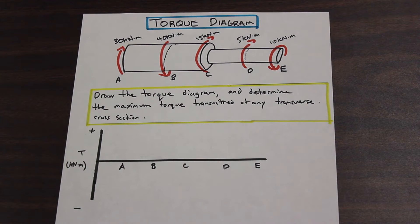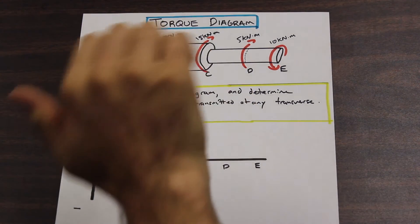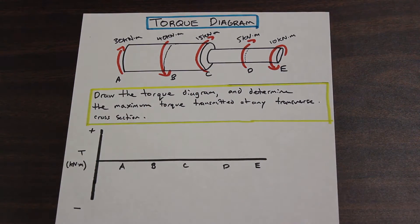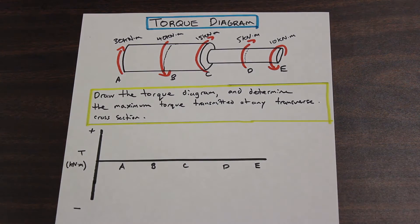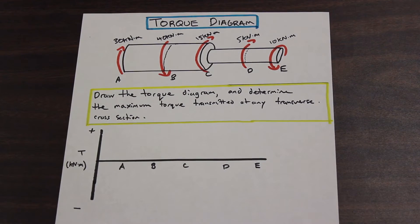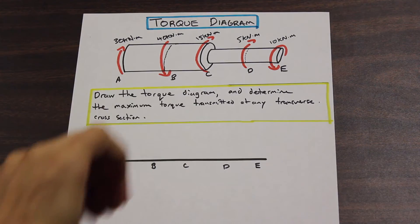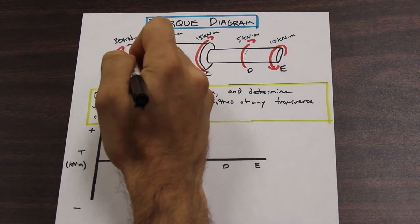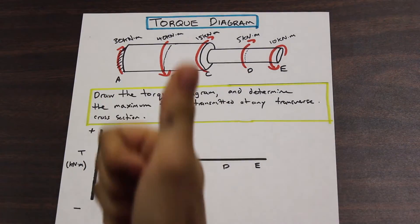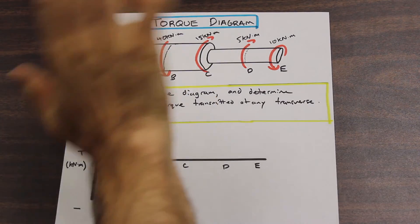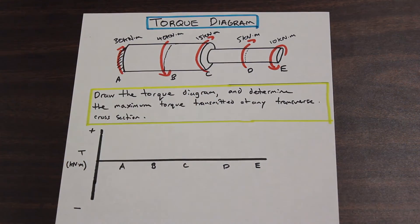The sign convention when we're doing this without equilibrium equations is that the clockwise direction is going to be positive. If we're doing equilibrium equations it would be the reverse, but we're not doing that here. Another way to think of it: using the right-hand rule, when our thumb is pointed towards the rigid support, we consider that positive. That's another way to think of it if that helps.